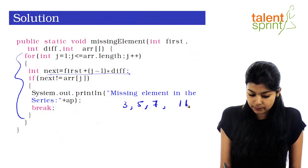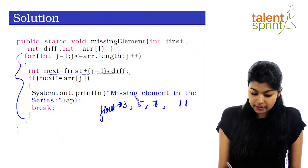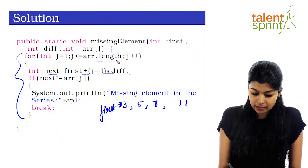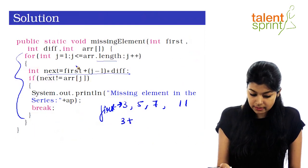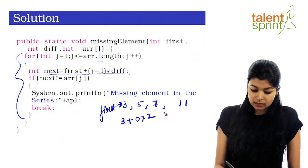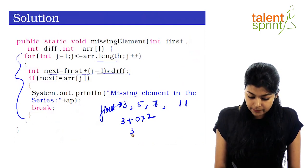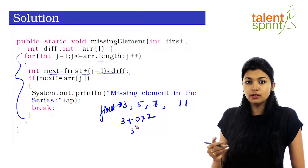The array length is calculated using the dot-length function. At j=1, next = first + (j-1) × difference = 3 + 0 × 2 = 3. We then compare: if 3 is already present in the series, we move on. If it is not there, we print that the missing element is that particular number.